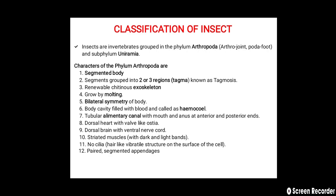The characters of phylum Arthropoda are: segmented body with segments grouped into two or three regions called tagmata (tagmosis); renewable chitinous exoskeleton; growth by molting; bilateral symmetry; body cavity filled with blood called hemocoel; tubular alimentary canal with mouth and anus; dorsal heart with ostia; dorsal brain with ventral nerve cord; striated muscles; no cilia; and paired segmented appendages.